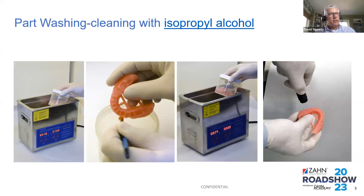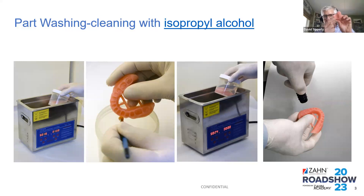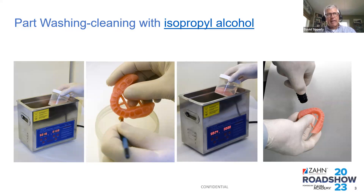When printing the base, T-bars are needed for accuracy — in 3-shape they're part of the software; in InLab you'd use Mesh Mixer. After printing, break off all fencing and supports. Put the base in a rigid glass or plastic container with isopropyl alcohol and run the ultrasonic cleaner for two minutes. Then clean tooth sockets with fresh IPA, run the ultrasonic for one more minute, blow dry, and let it air dry. Shiny spots indicate remaining residue — use a soft bristle brush to clean sockets thoroughly.